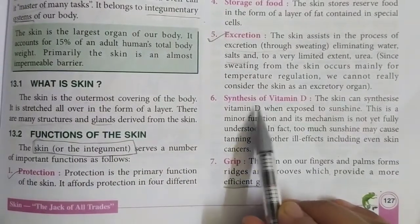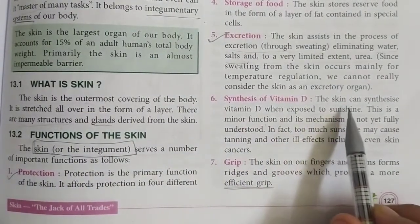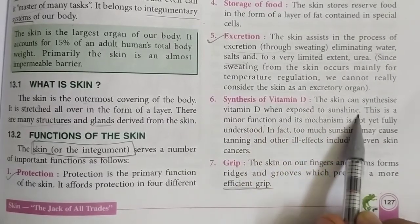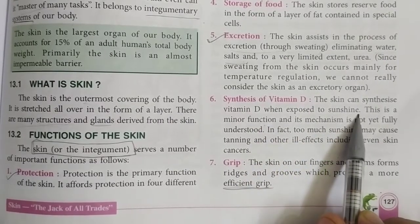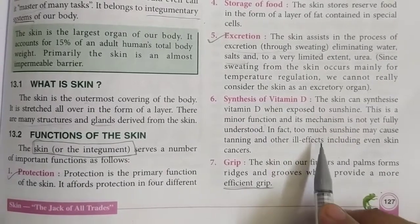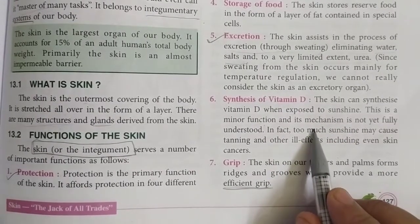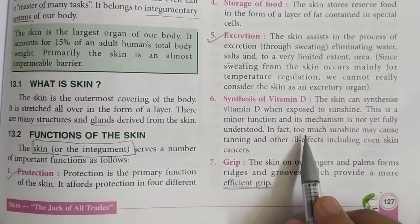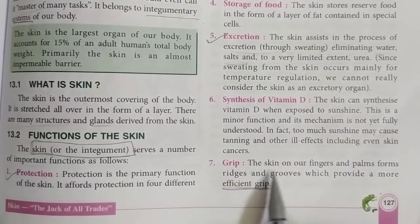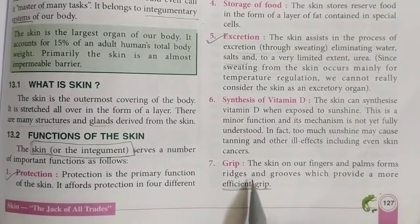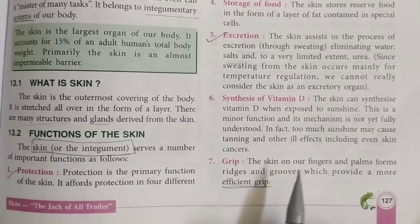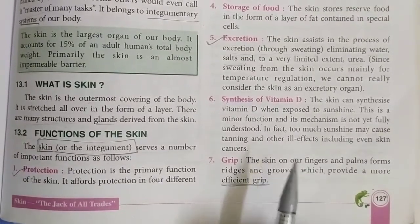The next important function is synthesis of vitamin D. Skin can synthesize vitamin D when exposed to sunshine, although this topic is still under study and the mechanism behind it is not clearly understood. Finally, skin on our fingers and palms forms ridges and grooves which provide a more efficient grip, helping us hold things.